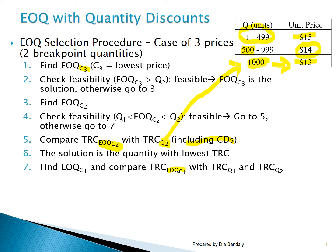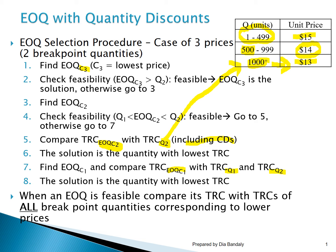If the EOQs corresponding to the two other price ranges were not feasible, this one will be feasible. But we still don't jump to the conclusion that this is our quantity. We need to compare its TRC with TRC of Q1 (500 units) and TRC of Q2 (1000 units). The one with the lowest total relevant cost is our optimal quantity. This is the complete procedure — it may look complicated, but once you see it applied through an example it's very straightforward. Note: though this procedure shows two breakpoints, the same logic applies no matter how many breakpoints there are.